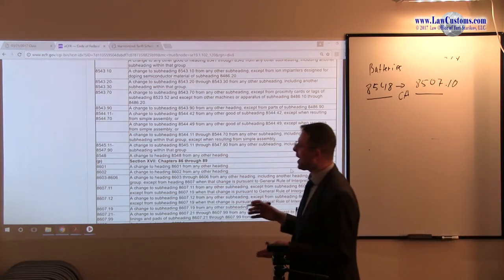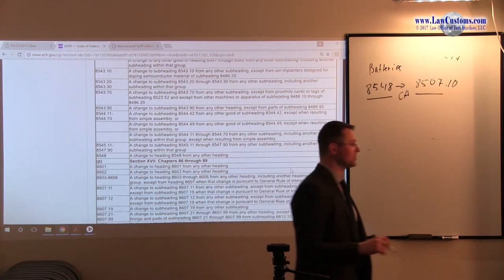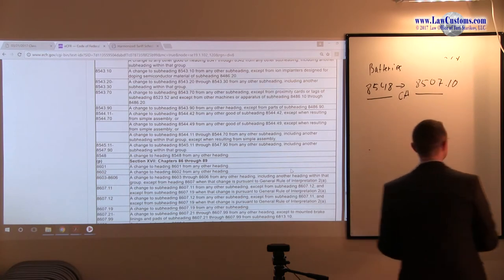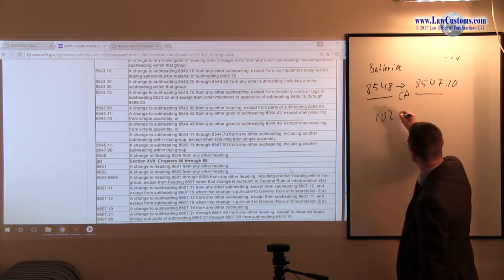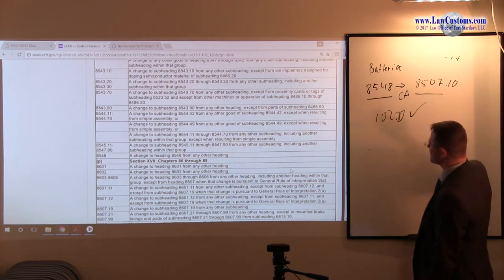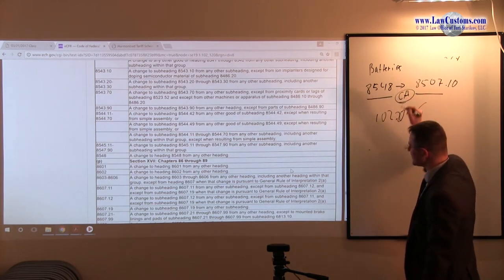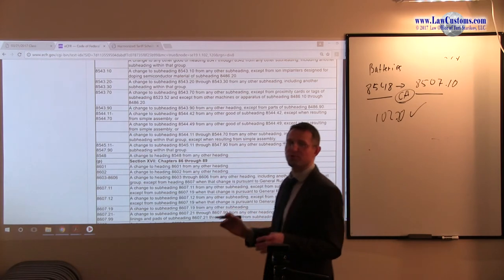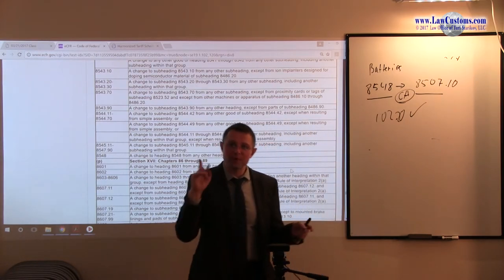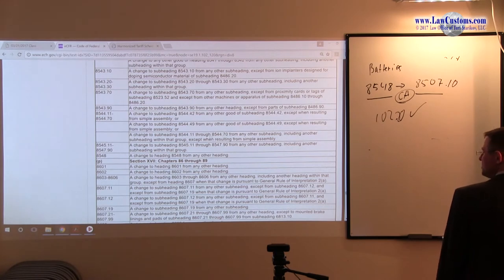So under this tariff shift methodology, this means that the 102.20 tariff shift has been met. This means that under, at least under the marking rules, Canada is a country of origin. So the spent batteries qualify for NAFTA. But wait, but wait. Here's what CBP, Customs and Border Protection has said.